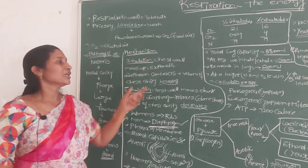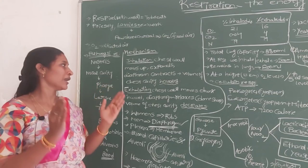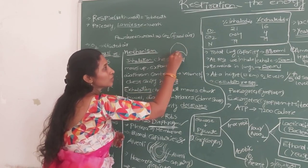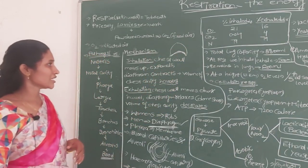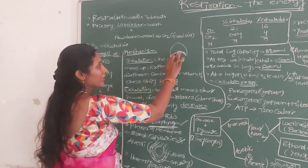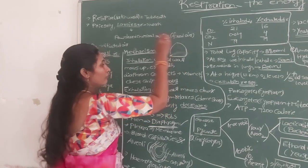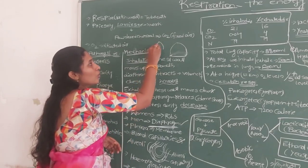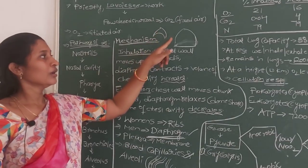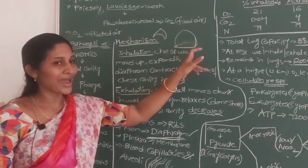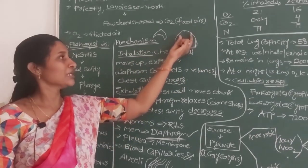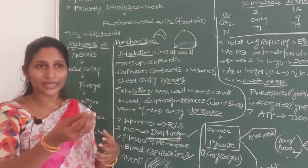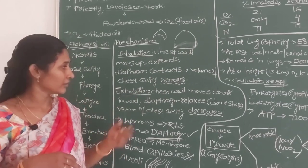During inhalation, the chest wall moves upward and expands. The diaphragm contracts and flattens, which increases the volume of the chest cavity. When the volume of the chest cavity increases, the pressure inside the lungs decreases, causing air from outside to rush into the lungs.